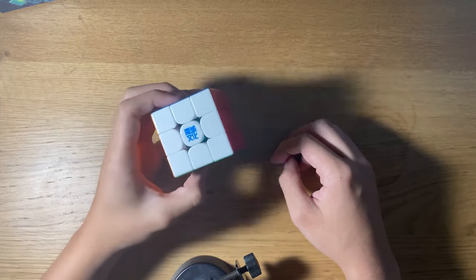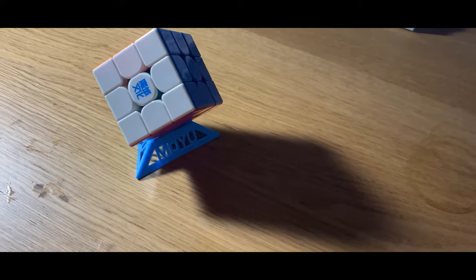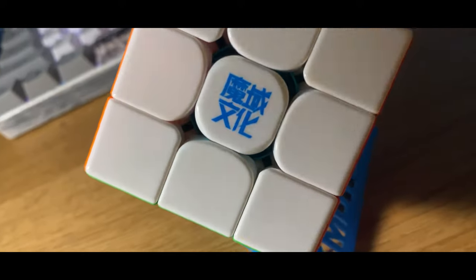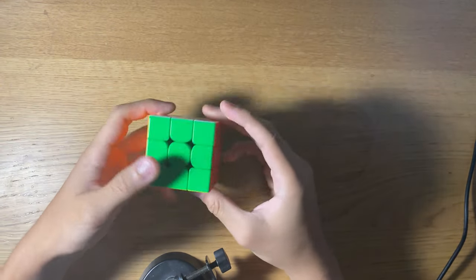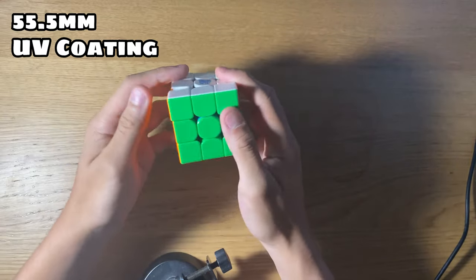Okay, so the Worm V9 is a 55.5 millimeter cube. The ball core version has UV coating, and there's a ball core.